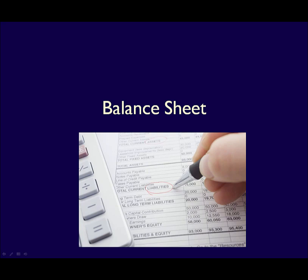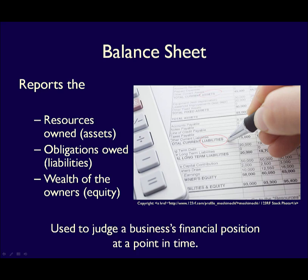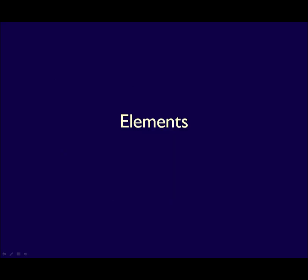The closing retained earnings at the bottom of the statement is then carried forward to the balance sheet, which is the subject of this video. The balance sheet summarizes the assets owned, the liabilities owed, and the equity which the business owes to the owners. This statement shows the financial health of a business at a specific point in time.